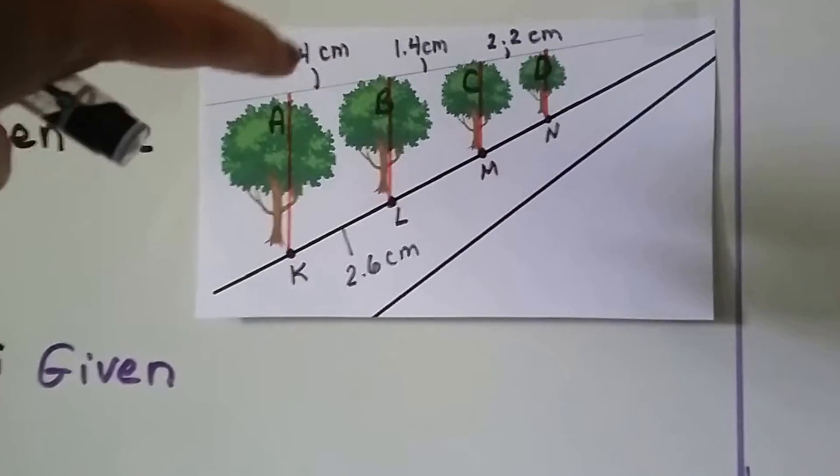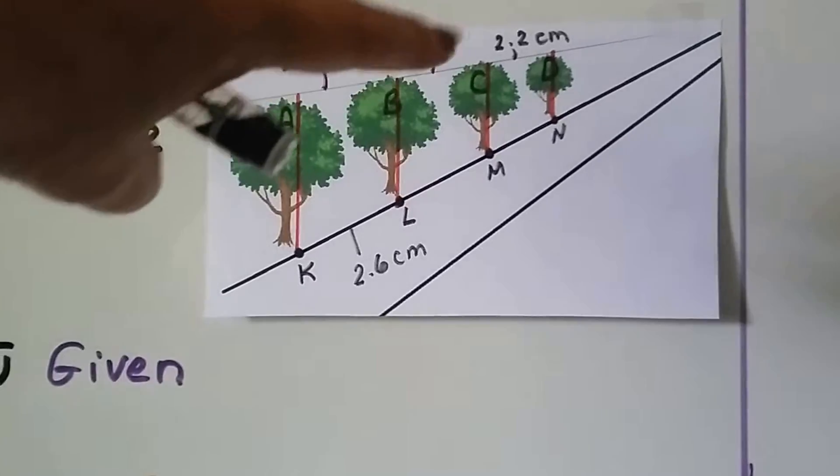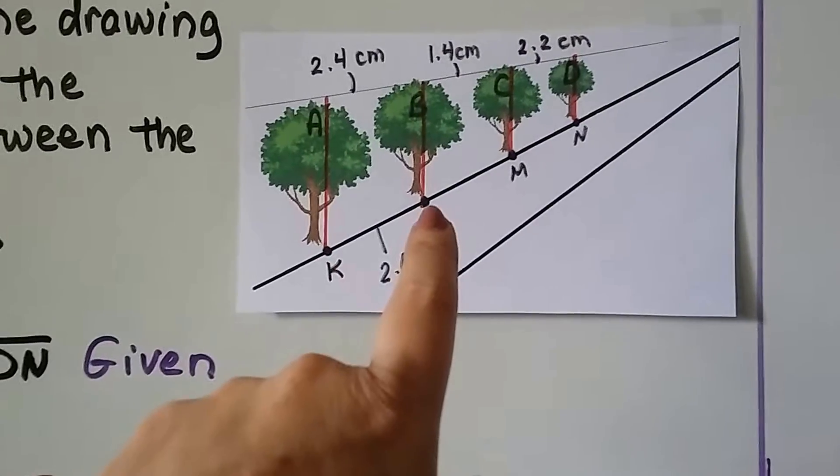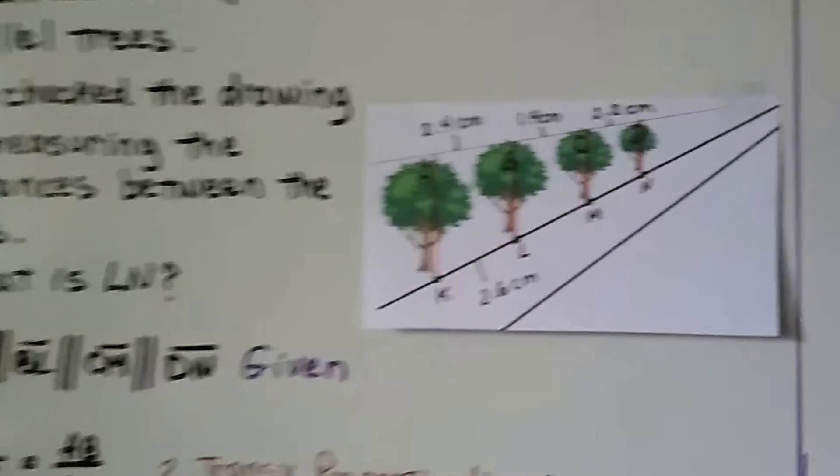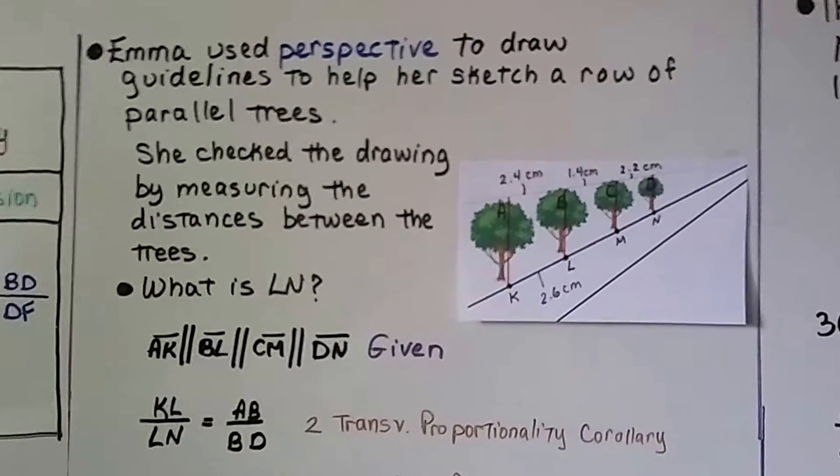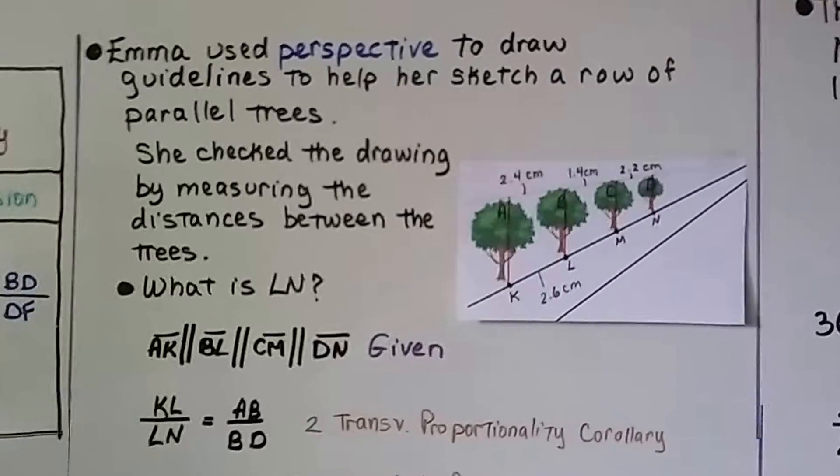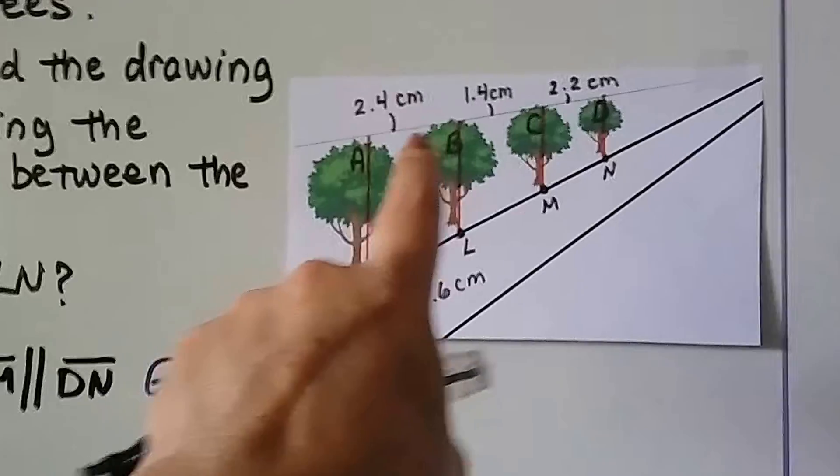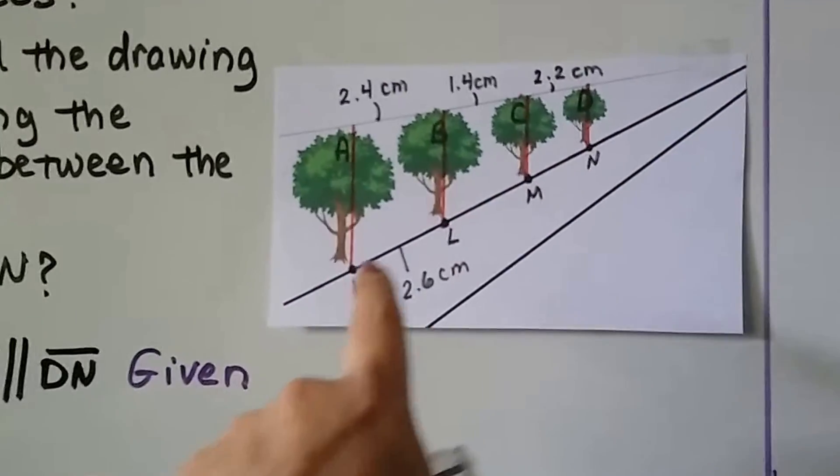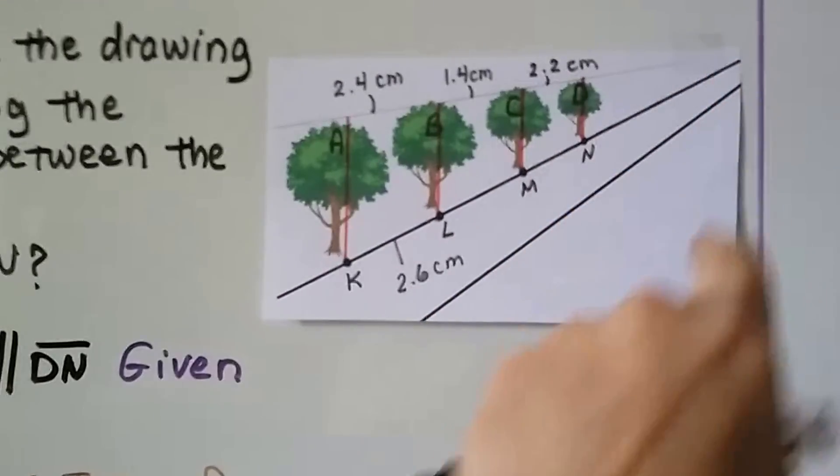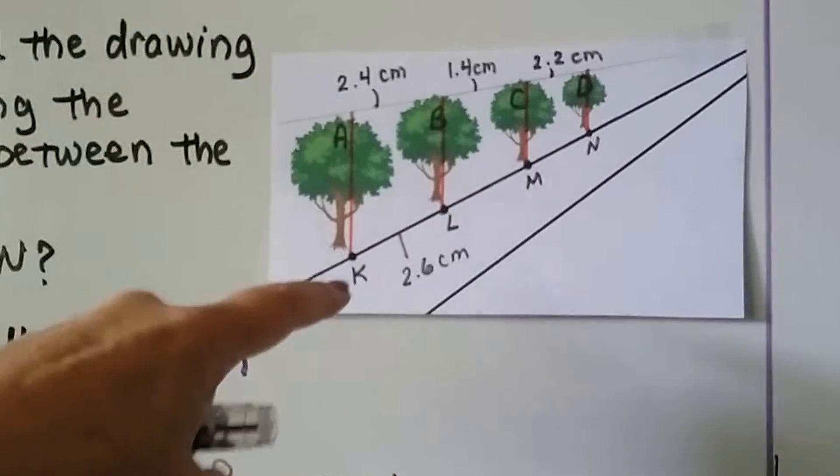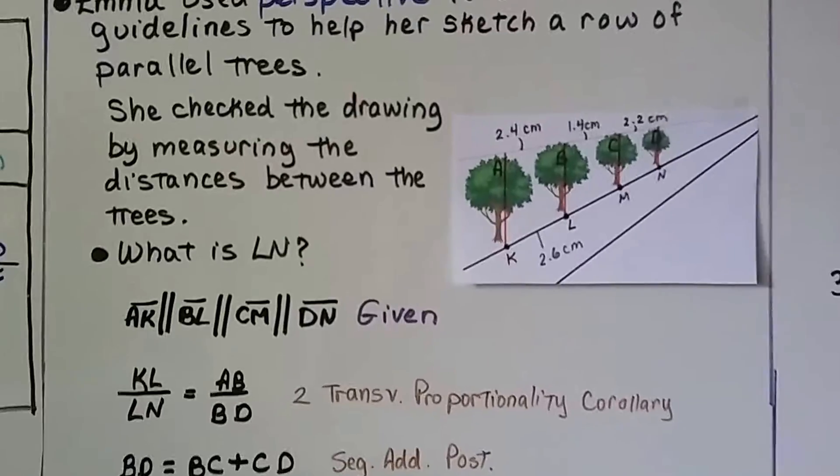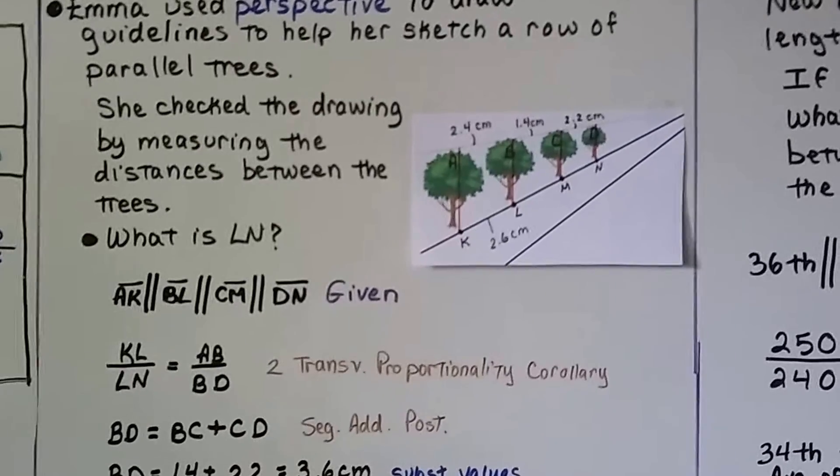And we can see the distance between A and B, and B and C, and C and D. And we have the distance between K and L. So Emma used perspective to draw guidelines to help her sketch a row of parallel trees.